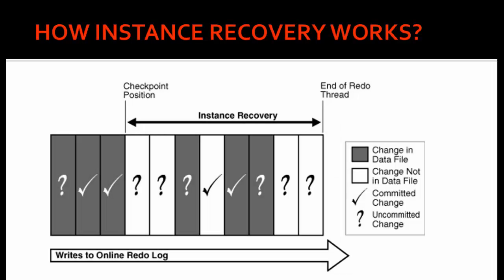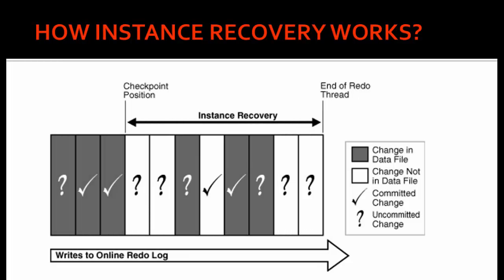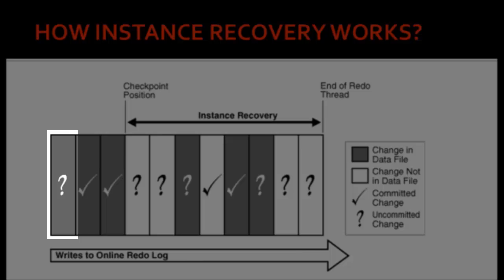The problem starts with transactions that are uncommitted changes but were written to the data files. These transactions need to be rolled back. How will Oracle roll back? The old images of the data will be available in undo blocks. The data block will be copied to the Oracle instance buffer cache, and the undo block containing the old image of this transaction will also be copied. Both will be swapped — the old value will be written to the data block and then written back to the data files, meaning this transaction is rolled back. The same happens for all other such uncommitted transactions written to disk.